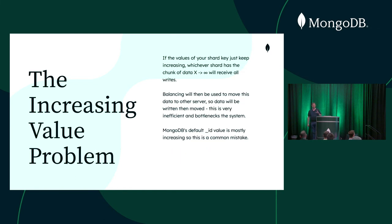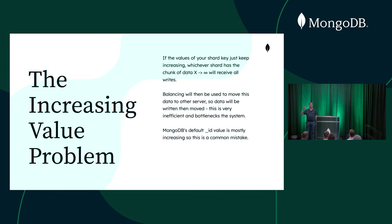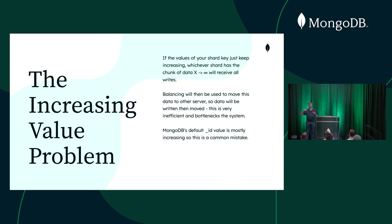I need to talk about the increasing value problem briefly. If you pick a value for your shard key that just keeps increasing, there will be a chunk somewhere where all of those values go — wherever that range is, it's going to go in there. This has been a common problem where people just pick the default document ID — the value of underscore ID in MongoDB — and all the writes go to one server. Then the balancer has to move them off that server, so we're not actually increasing our write capacity because everything's being written to the same server.